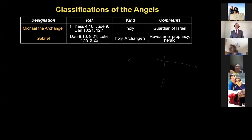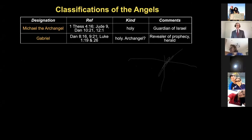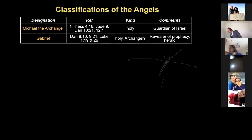The other angel named in scripture is Gabriel. We see Gabriel in Daniel chapters 8 and 9, where he appears to give interpretations of visions to Daniel. Then in Luke chapter 1, Gabriel is involved in announcing the birth of Christ. Gabriel seems to have a special role as a revealer of prophecy and as a herald of important events.